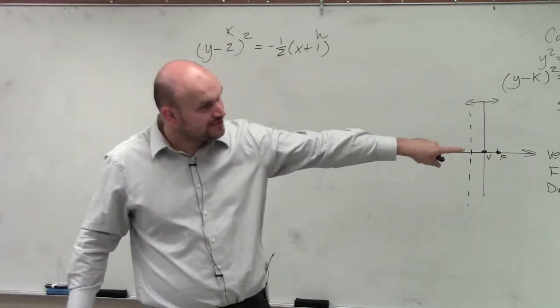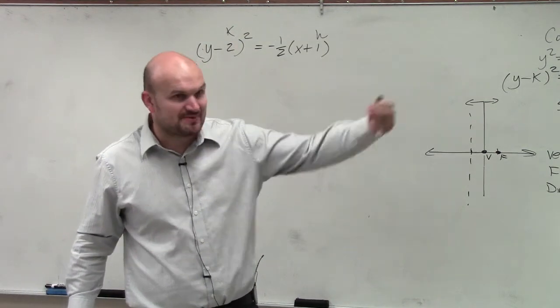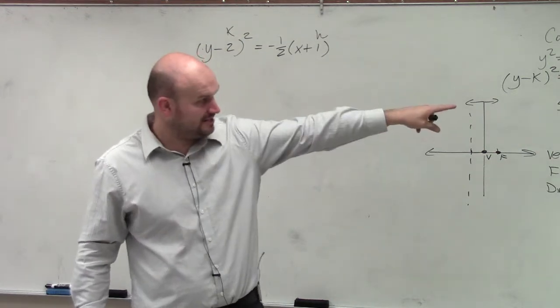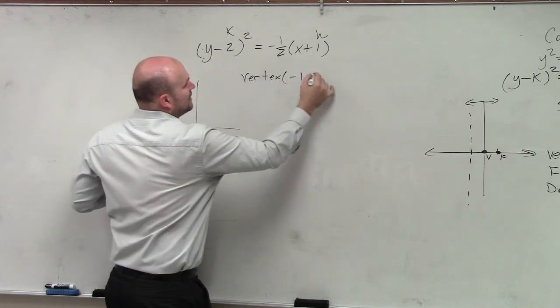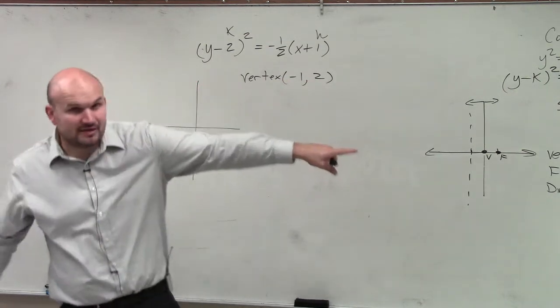But remember the formula. It's just like quadratics you guys learned. x opposite of h. It's the opposite. So therefore, my vertex is negative 1, 2, just like you guys learned before.